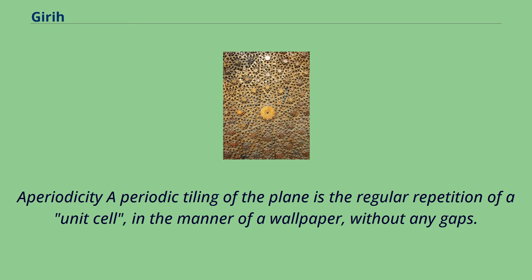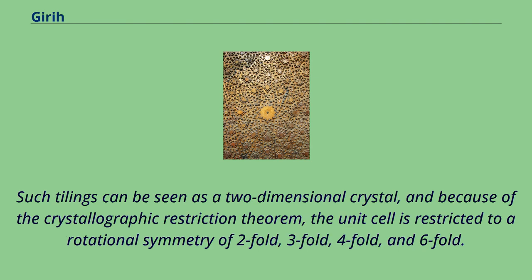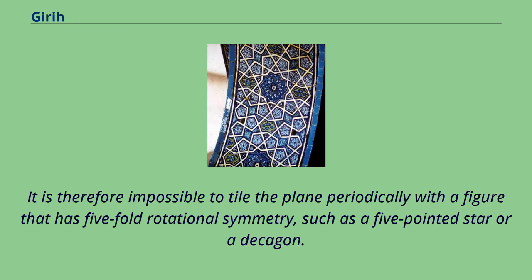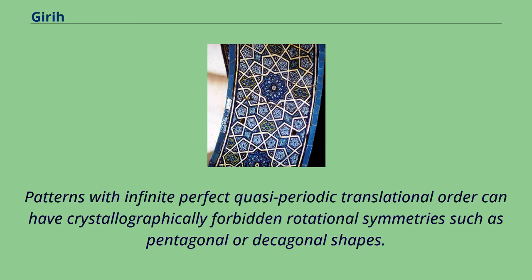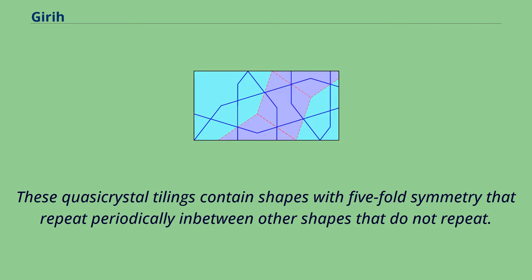Periodic tiling of the plane is the regular repetition of a unit cell, in the manner of a wallpaper, without any gaps. Such tilings can be seen as a two-dimensional crystal, and because of the crystallographic restriction theorem, the unit cell is restricted to rotational symmetry of two-fold, three-fold, four-fold, and six-fold. It is therefore impossible to tile the plane periodically with a figure that has five-fold rotational symmetry, such as a five-pointed star or a decagon. Patterns with infinite perfect quasi-periodic translational order can have crystallographically forbidden rotational symmetries, such as pentagonal or decagonal shapes — these quasi-crystal tilings contain shapes with five-fold symmetry that repeat periodically in between other shapes that do not repeat.